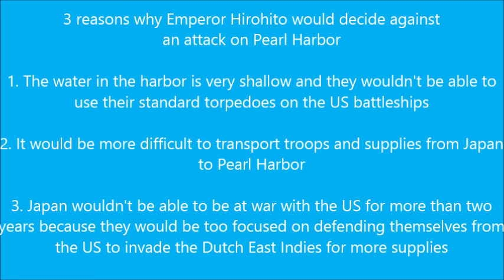Three reasons why Emperor Hirohito would decide against an attack on Pearl Harbor: one, the water in the harbor was very shallow and they wouldn't be able to use their standard torpedoes on the US battleships; two, it would be more difficult to transport troops and supplies from Japan to Pearl Harbor; three, Japan wouldn't be able to sustain a war with the United States for more than two years because they would be too focused on defending themselves to invade the Dutch East Indies for more supplies.